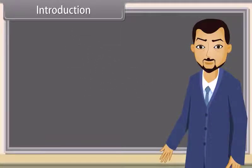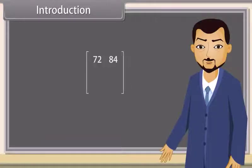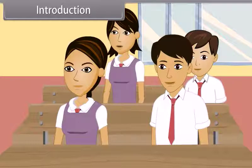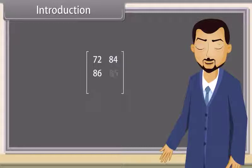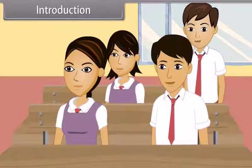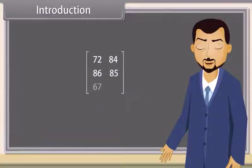Arun, how much did you score in science last year? 72. And in maths? 84. Shraddha, how much did you score in science and maths? I scored 86 in science and 85 in maths. Prateek, you tell me. 67 in science and 72 in maths. Can you see I have written your marks in this bracket? What does this represent? This represents a matrix.